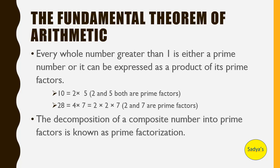So what did he say? That every whole number which is greater than 1 is either already a prime number, and if it's not a prime number, if it's a composite number, then it can be expressed as product of its prime factors. For example, if we have 10, 10 can be written as 2 into 5. So 2 and 5 both are prime factors of 10.